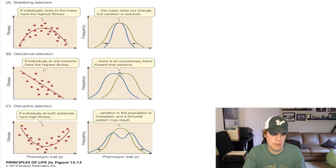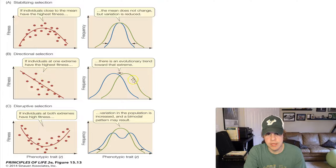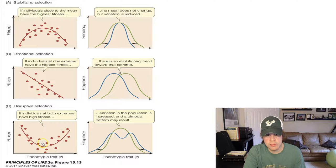For stabilizing selection, if individuals close to the mean have the highest fitness level, the curve gets narrower over time — it doesn't go higher, just narrows. For directional selection, if individuals at one extreme have the highest fitness, you see a shift — more individuals survive at the low end, so there's an evolutionary trend in that direction. For disruptive selection, if the middle individuals don't survive well but the extremes do, you end up with a bimodal distribution.